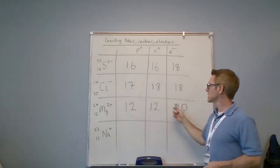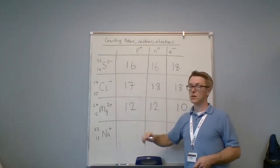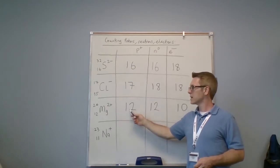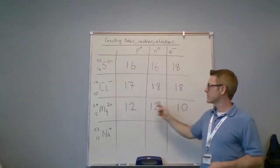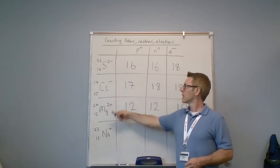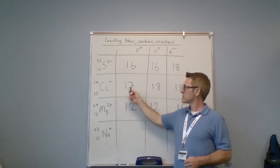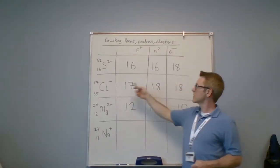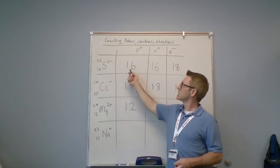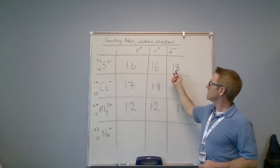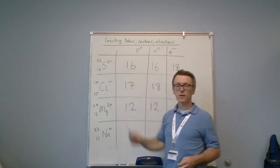The sum of the protons and electrons should give you the charge. So 12 positives and 10 negatives gives you two positives. 17 positives and 18 negatives gives you one negative. 16 positives and 18 negatives gives you two negatives. So you can always check.